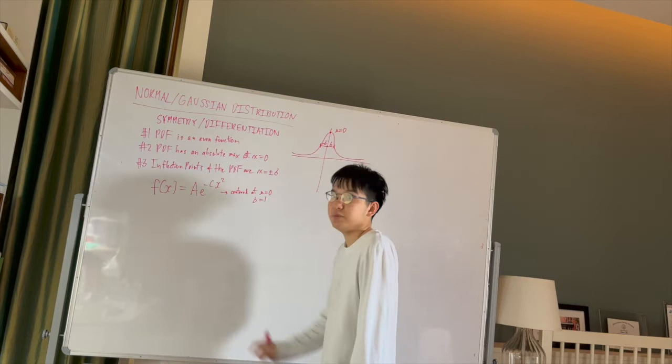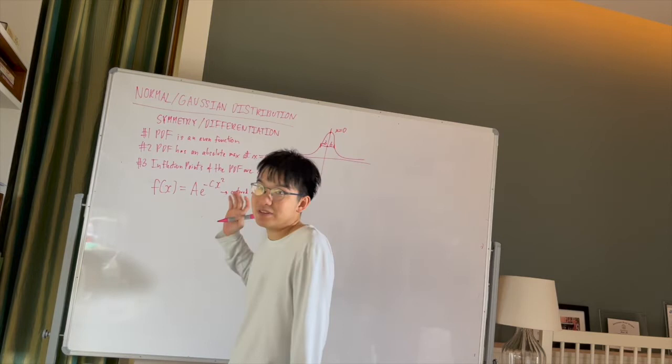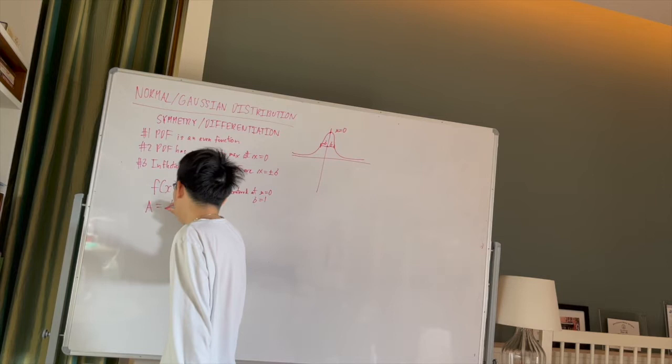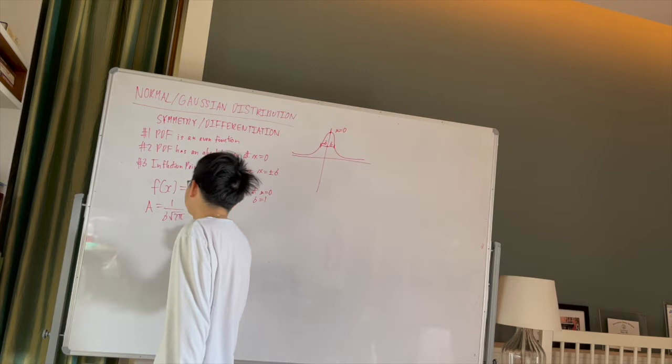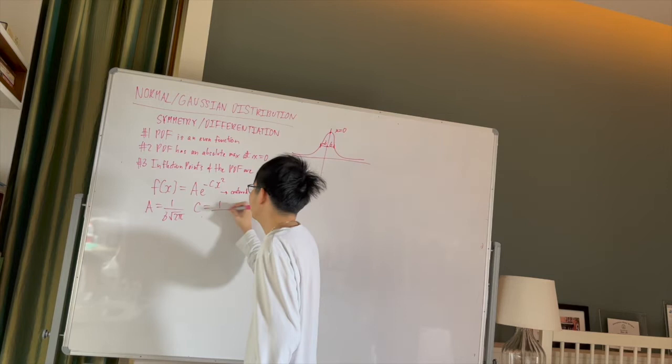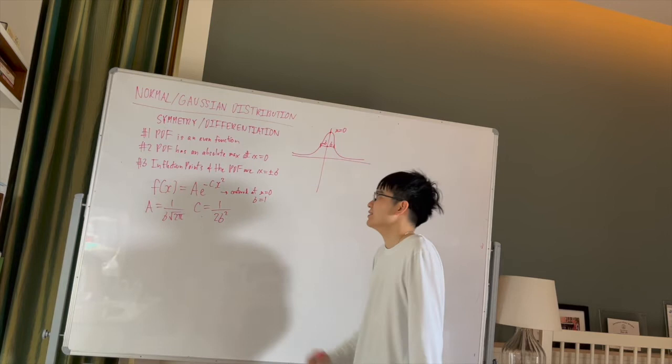Now the A, which I will show in the previous video involving the multivariable integration properties, is going to be one over sigma times the square root of two pi. And C, on the other hand, is going to be one over two times the standard deviation squared, or the variance in this case. The standard deviation squared equals variance.